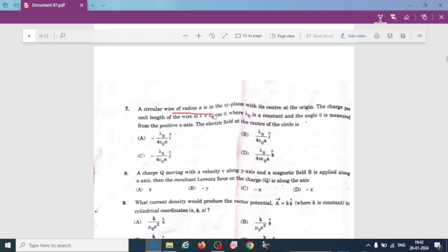Circular wire of radius a in the xy plane with its center at the origin. The charge per unit length of the wire is lambda equal to lambda naught cos theta, where lambda naught is a constant and the angle theta is measured from the positive x-axis. The electric field at the center of the circle is minus lambda naught divided by 4 epsilon naught a in the i-cap.